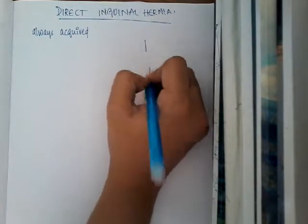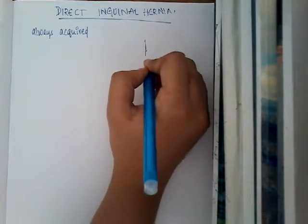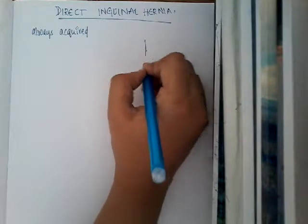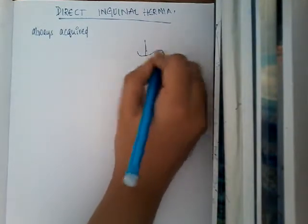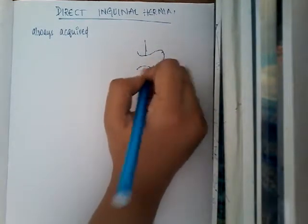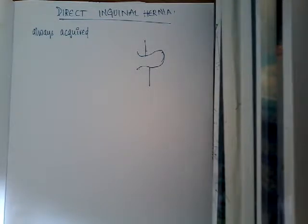It is mainly because there is a weakness or defect in the transversalis fascia, and because of this weakness, there is protrusion of bowels to the outside. This hernia most commonly occurs in Hesselbach's triangle.